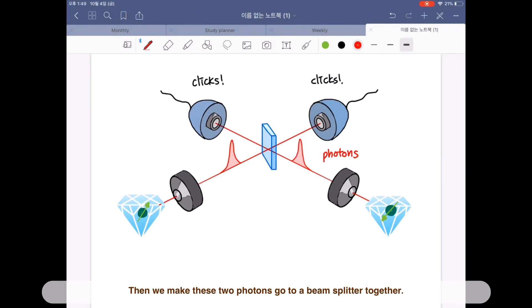Then, we make these two photons go to a beam splitter together. After this beam splitter,